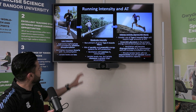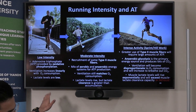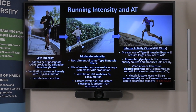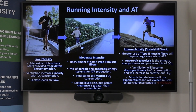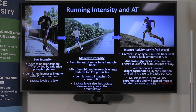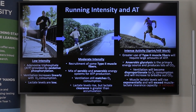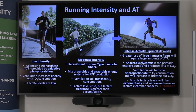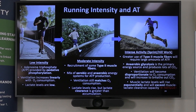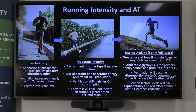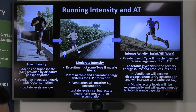We start off with low-intensity activity, and essentially we've got ATP being produced mainly by the aerobic energy pathway called oxidative phosphorylation. That produces large amounts of ATP, and it's for low-intensity exercise which we can sustain for quite a long period of time. Ventilation is increasing linearly with oxygen consumption, and we're not producing much lactate — lactate levels are quite low.